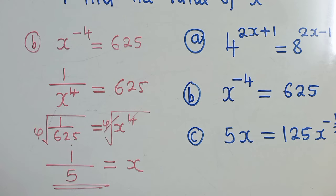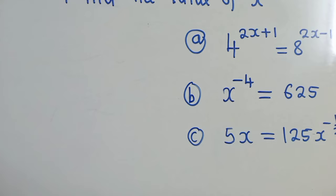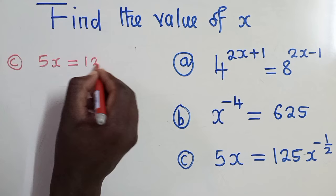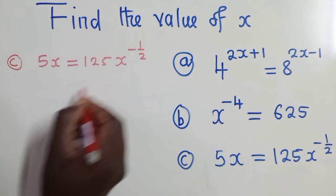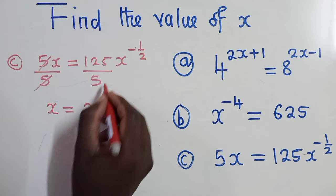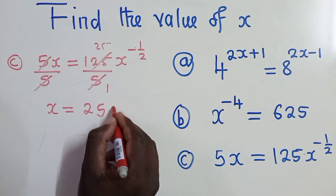Question C. So for question C here, we need to be very, very careful. So we shall say C, 5x is equal to 125 x power negative 1 over 2. So the first thing here will be to divide by 5 both sides. So we shall have x is equal to 25, because 5 into 5, 1 into 2, 125, it's 25. So 25 x power negative 1 over 2.